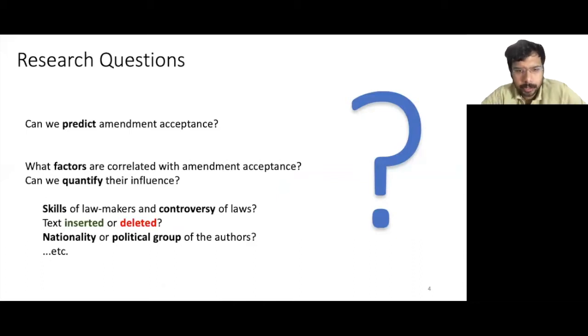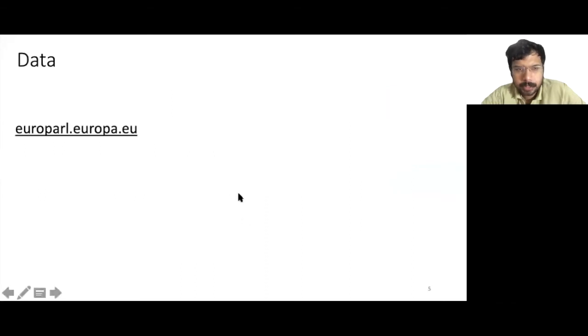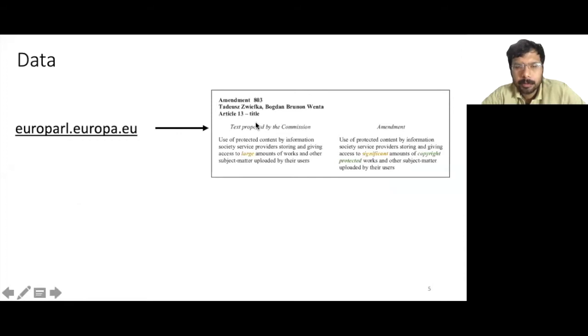To answer these questions, we need data. To obtain this data, we scrape the European Parliament website to obtain files of the proposed amendments. From these files, we can extract the metadata of an amendment, such as the authors of the amendment, which law it is proposed on, etc.